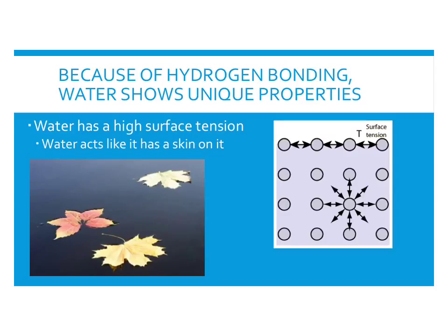Because of hydrogen bonding, water shows other unique properties, including high surface tension — it acts like it has a skin. You've probably seen leaves or bugs that can walk on water, and this is due to water's high surface tension. Imagine water molecules underneath the surface: in every direction each molecule is attracted to others. But at the surface of a lake or pond, there's no water above — just air — so those surface molecules are pulled downward and attracted to molecules below, making them act like a skin at the surface.